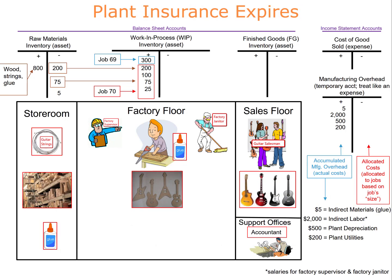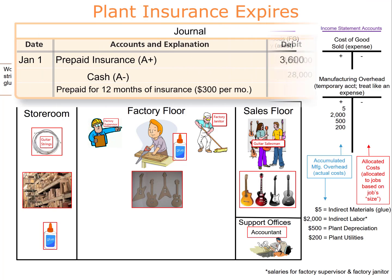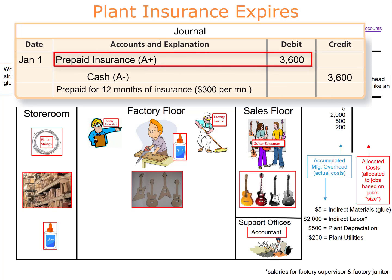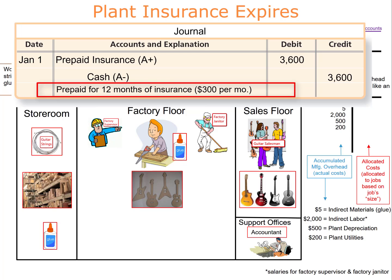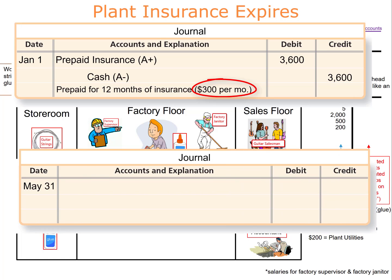Since it's the end of May, the company must enter the adjusting entry showing that plant insurance has expired. Back on January 1st, the company paid $3,600 of prepaid insurance — they debited the prepaid insurance asset account. Since they prepaid for 12 months, $3,600 divided by 12 months means each month of insurance is worth $300.